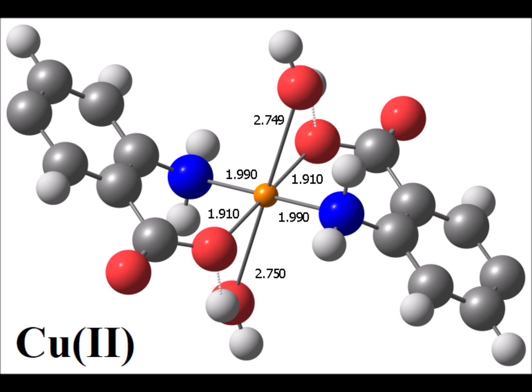So here we have a visualization of a calculation involving the tetragonally distorted copper two plus. And if you look at the distances from the metal to ligand, you can see the tetrahedral distortion is rather substantial.